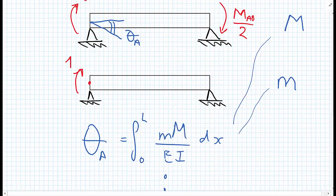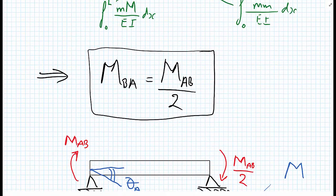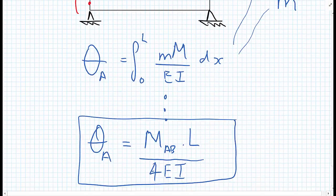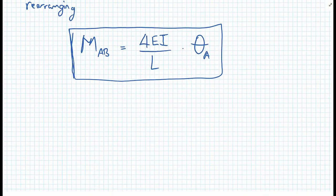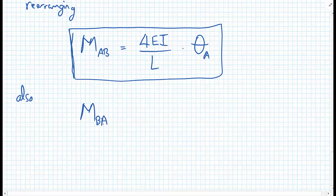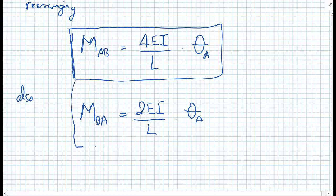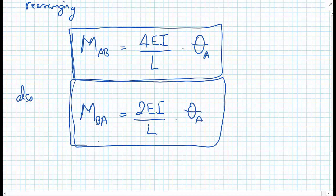Also, earlier in this derivation, we found that MBA equals MAB divided by 2. So we can also write that MBA equals 2EI divided by L, multiplied by theta A. We're going to use these results in later methods called the slope deflection equation method, or the direct stiffness method.